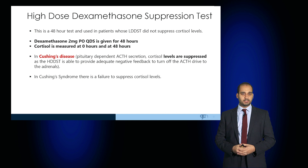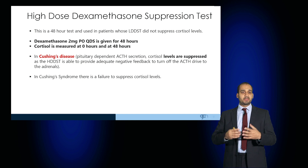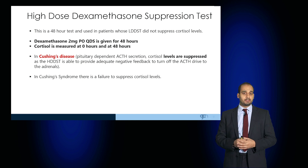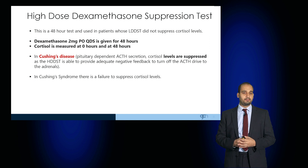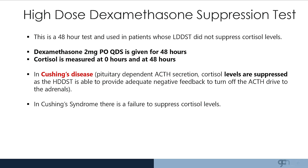The high dose dexamethasone suppression test takes place over 48 hours. Dexamethasone is administered orally regularly for a period of 48 hours and cortisol is measured intermittently. If the levels are suppressed with high dose dexamethasone, this would localise the disease to the pituitary and the patient is diagnosed with Cushing's disease.